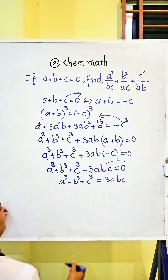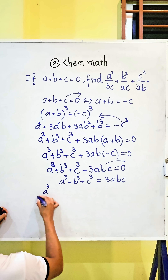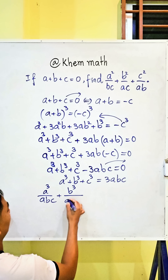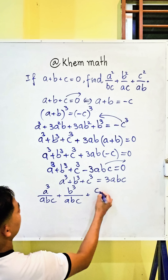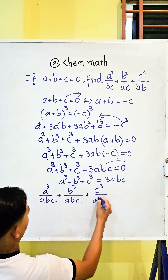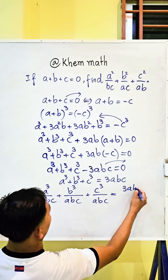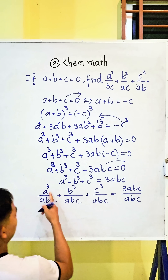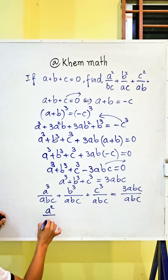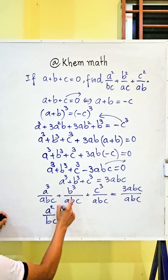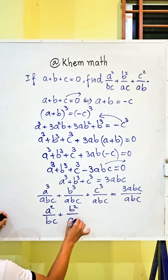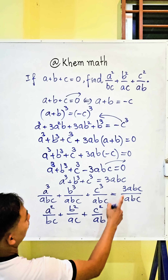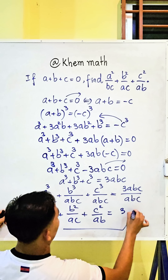Now we divide both sides of this equation by abc. We get a power three divided by abc, plus b power three divided by abc, plus c power three divided by abc. Simplifying, we get a squared divided by bc, plus b squared divided by ac, plus c squared divided by ab, which equals three — and that is our answer.